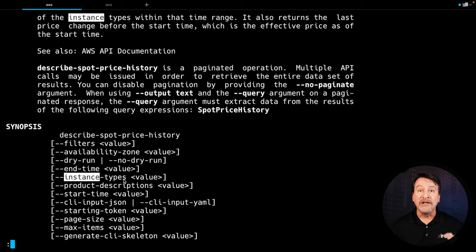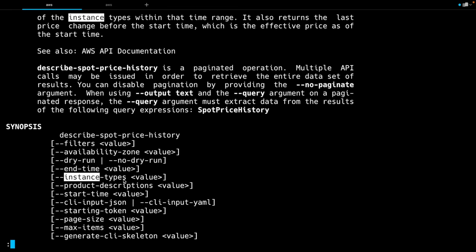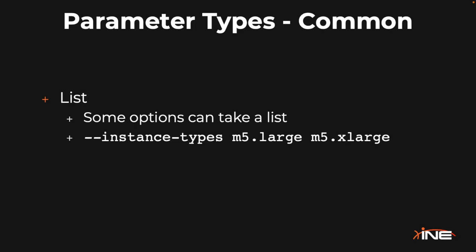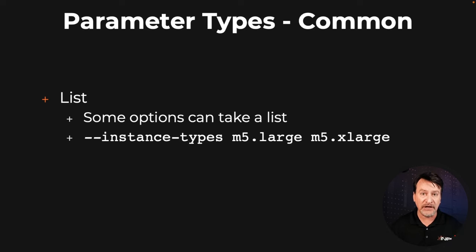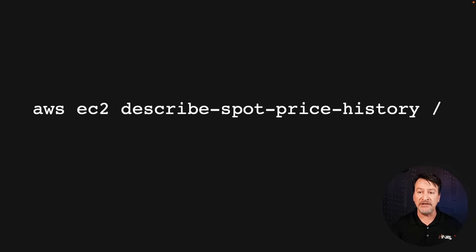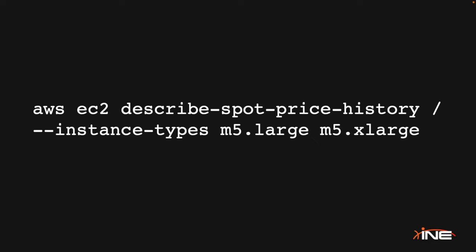With the list, it typically gives you that plural indicator — in this case, instance-types — and you can supply more than one particular value for that particular thing you're looking for. So if we run our command AWS EC2 describe-spot-price-history, I can now do --instance-types m5.large m5.xlarge. Let's go run the command and see what we get.